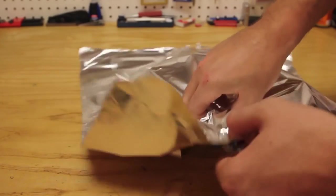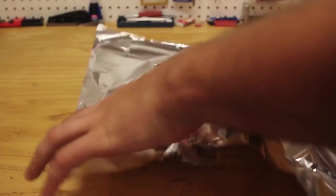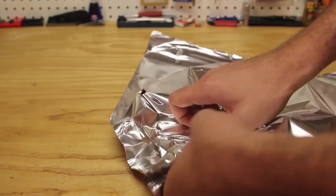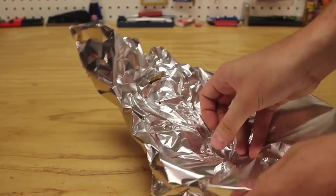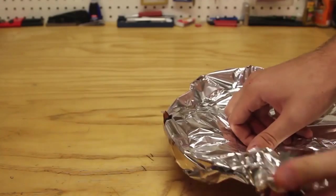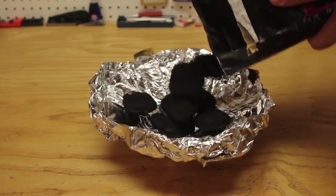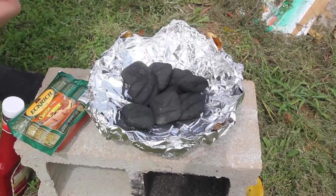Now we're gonna get aluminum foil sheet and smash it in a can and kinda wrap it all around. So make it like a plate. Then we're going to put bunch of charcoal. That should be enough.